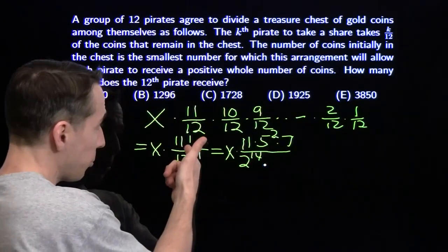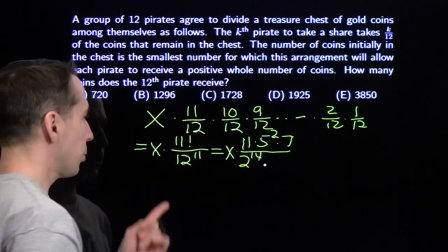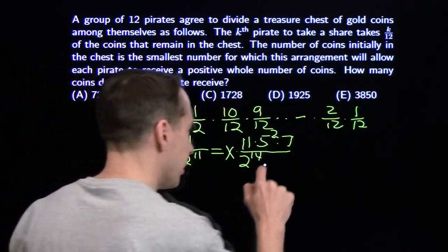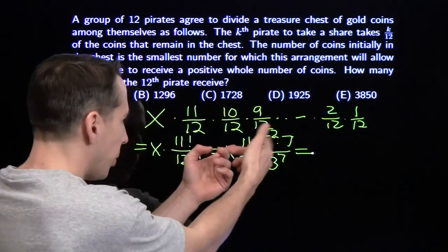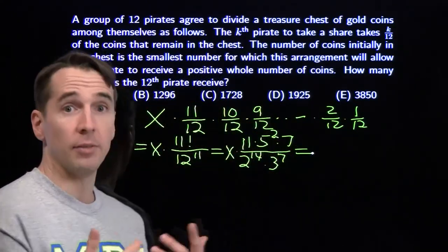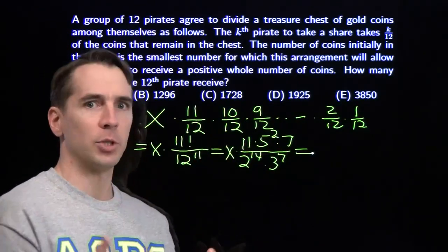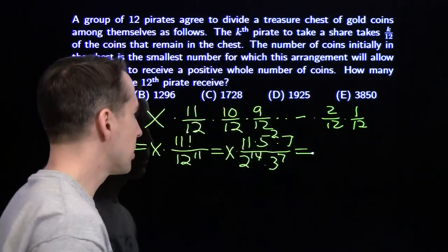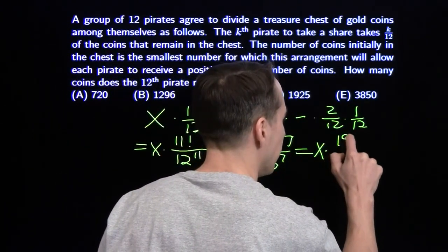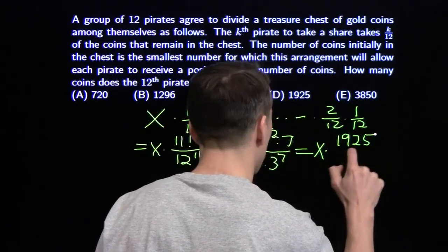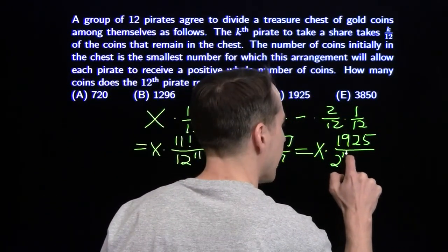For the factors of 3: you have 3, 6, and 9 in 11 factorial, with an extra factor from the 9, giving 4 factors of 3 in the numerator and 11 in the denominator, leaving 3 to the 7th. Multiplying out the numerator: 7 times 11 is 77, times 25. Well, 77 times 25 is 1925. And that makes us happy because 1925 is sitting right there as an answer choice.